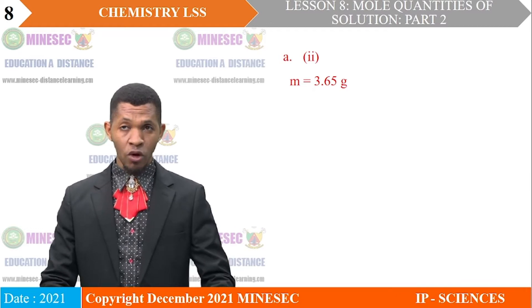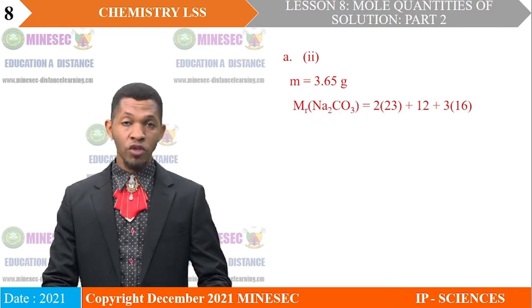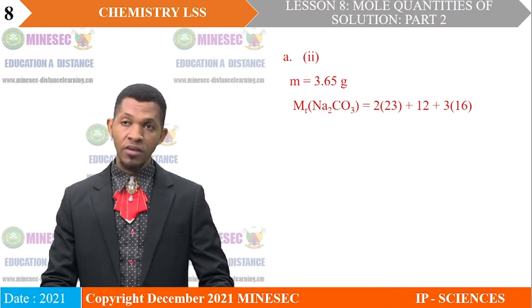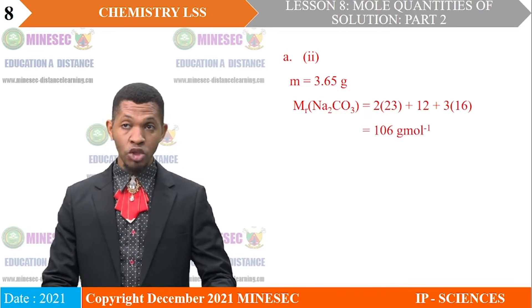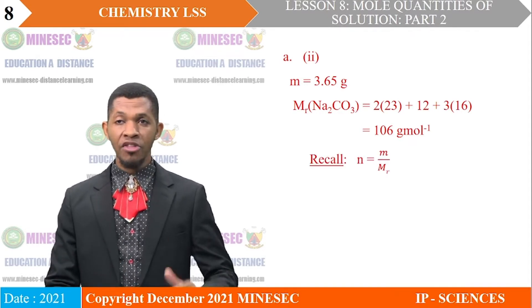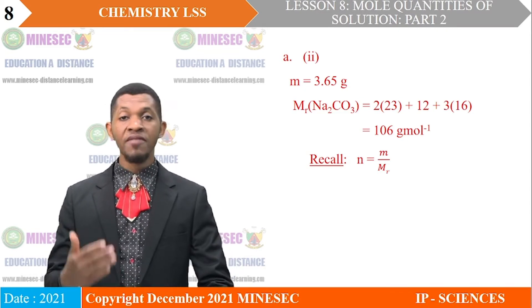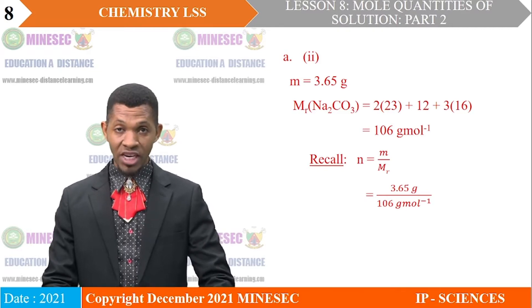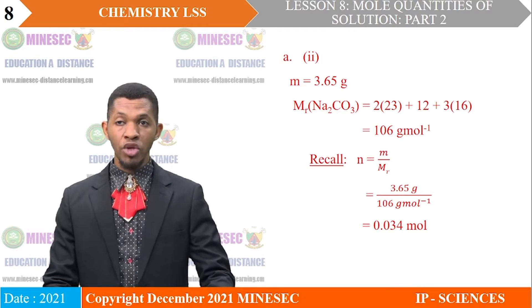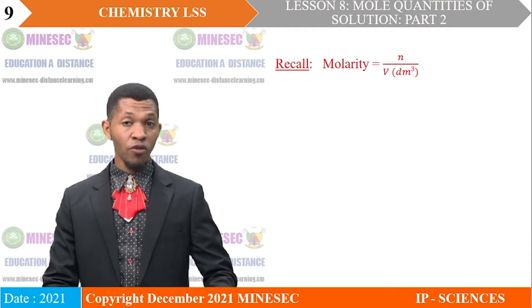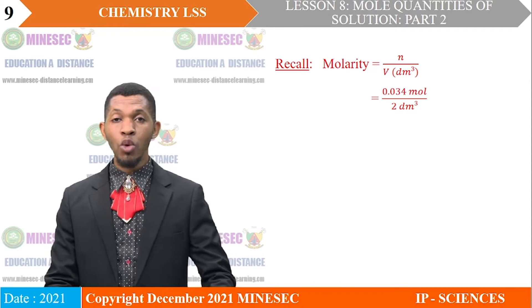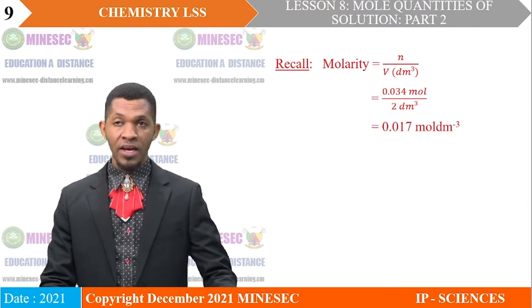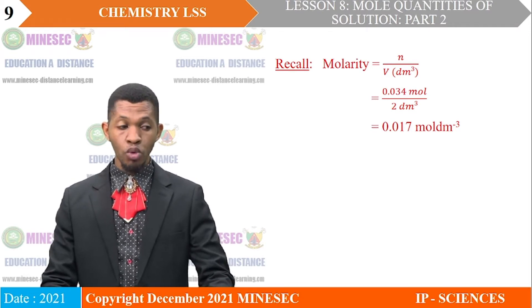Roman 2: The mass of the salt is 3.65 grams. The molar mass is given by 2 × 23 (sodium) + 12 (carbon) + 3 × 16 (oxygen), so the molar mass of sodium carbonate is 106 grams per mole. Number of moles equals given mass divided by molar mass: 3.65 ÷ 106 = 0.034 moles. Molarity equals moles divided by volume: 0.034 ÷ 2 = 0.017 moles per cubic decimeter.